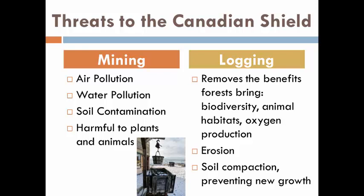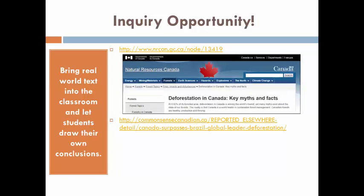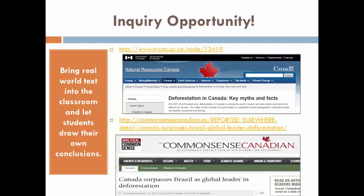Heavy machinery can leave the forest floor compacted, making it hard for new plant growth to begin. Environmental issues are often contested by groups with different perspectives. In Canada, the government has published facts on deforestation that minimize it as an environmental concern. At the same time, there are Canadian watchdog groups who publish information contradicting the government's findings. Exposing students to real-world text in areas of controversy such as this pushes them to take a stand and defend it, using sources they have critiqued and deemed reputable. This is yet another way of taking the 'explain' verb in this standard to its intended level of rigor.